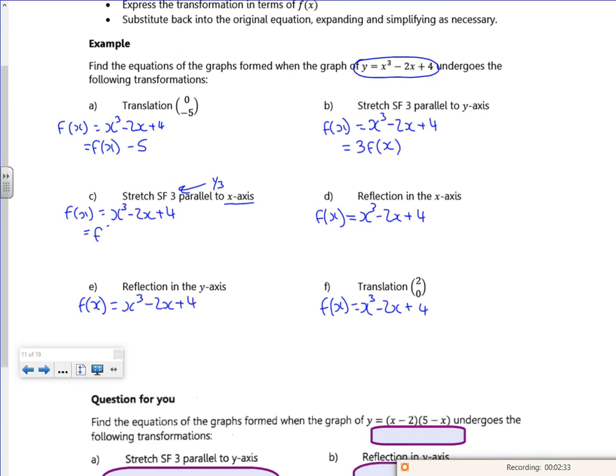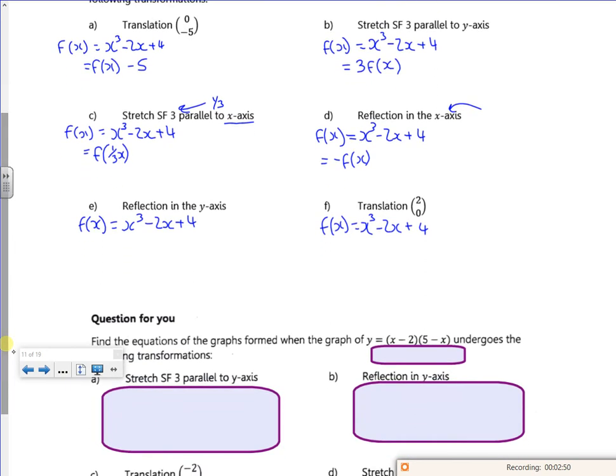So that would be f of a third x that I'm moving towards. A reflection in the x-axis is multiplying everything by minus 1. So that would be minus f of x. E is a reflection in the y-axis. So that's switching the sign on your x. So that's f of minus x.